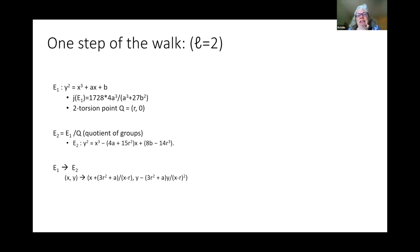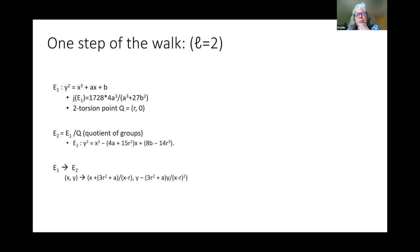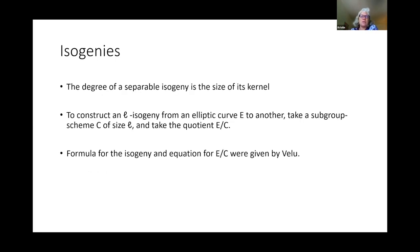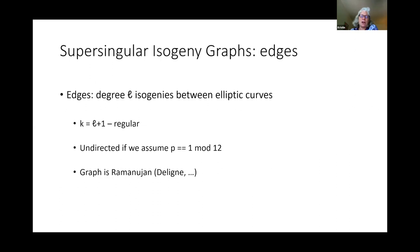In the exercises, Yana will have you working on some supersingular isogeny graphs for small primes and taking walks around the graph using two-torsion points — basically using these formulas to compute the new elliptic curve and the J invariant of the new elliptic curve. You can see how easy it is to do even on pencil and paper. The computer algebra systems Magma and Sage have a lot of these functions implemented already, so you can use those native functions. Hopefully you'll get some experience doing that.